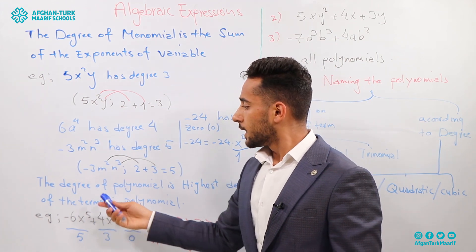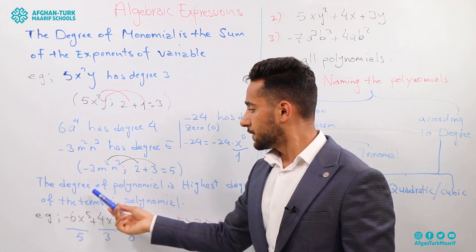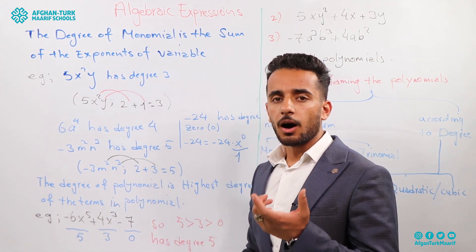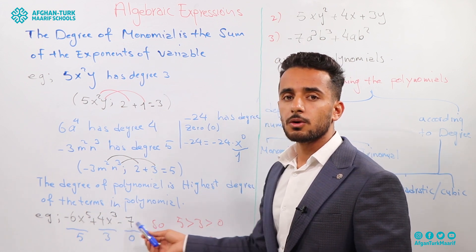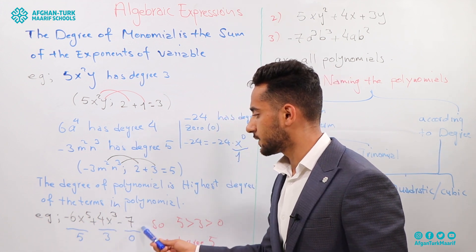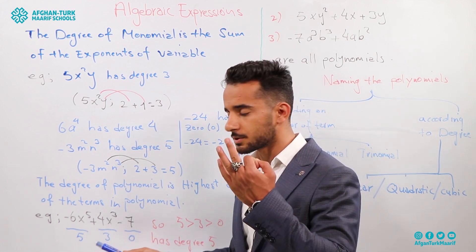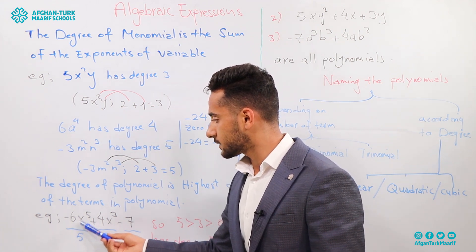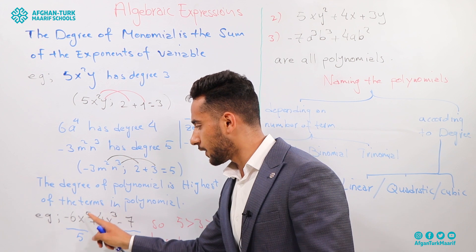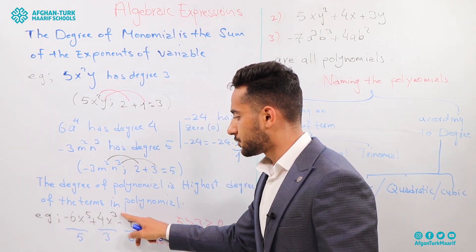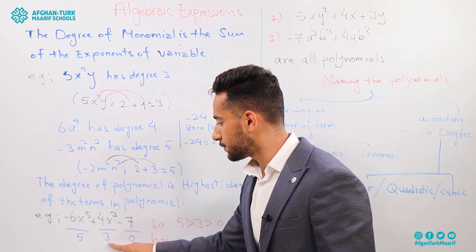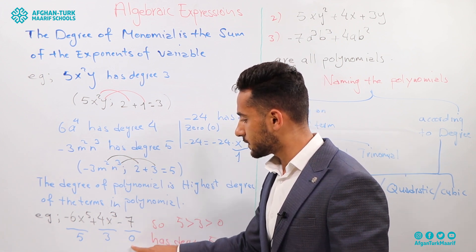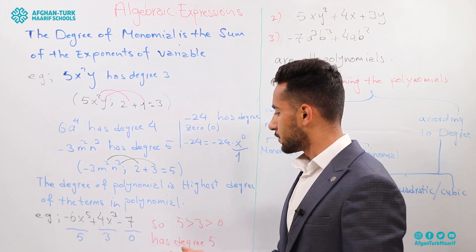The degree of a polynomial is the highest degree of its terms. We calculate the degree of each monomial separately, and the highest degree among them is the degree of the whole polynomial. For example, minus X to the power of 5 plus 4X cubed minus 7 is a trinomial. The first term has degree 5, the second has degree 3, and minus 7 is a constant with degree 0. Since 5 is the greatest, this polynomial has degree 5.